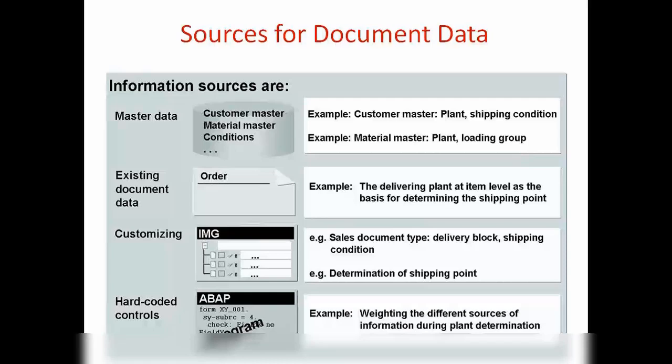Then we have conditions — condition records — which provide us information about pricing. We have seen this before in previous classes. We also have CIR records, which provide information like the customer material number and all that.